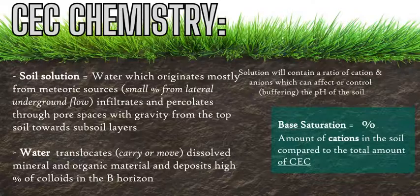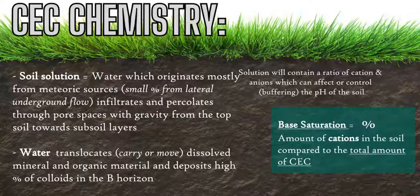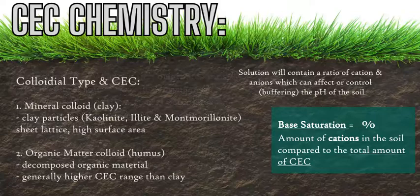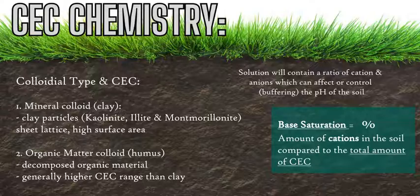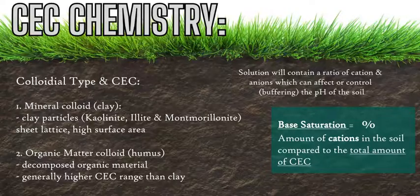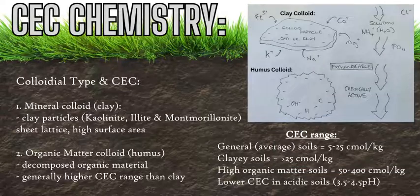Base saturation is the percentage of base cations available in the soil. The formula is: base cations divided by the CEC, times 100. Essentially, it measures how much base cations are present in the soil versus the overall negative sites available for exchange in the colloids — which can be either the humus organic material colloids, with very high CEC potential, or the smaller clay mineral colloids, which have a smaller total CEC amount.